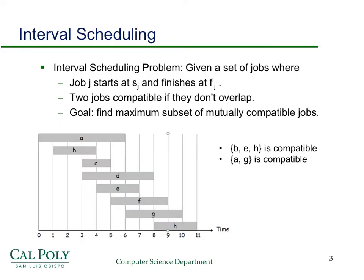The first problem we're going to look at is what's called interval scheduling or job scheduling. The idea is: given some set of jobs that have start times and finish times — you can think of these as computer jobs or any tasks — two jobs are compatible if they don't overlap. The processor, whether it's a human, a company, or a computer, can't do more than one thing at a time. The goal is to find a maximum subset of mutually compatible jobs.